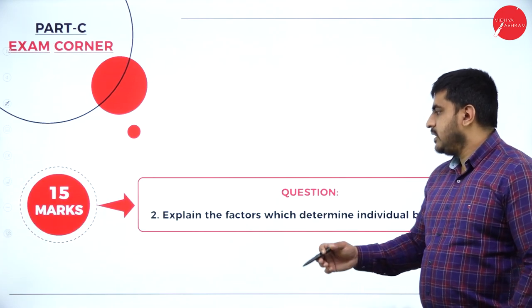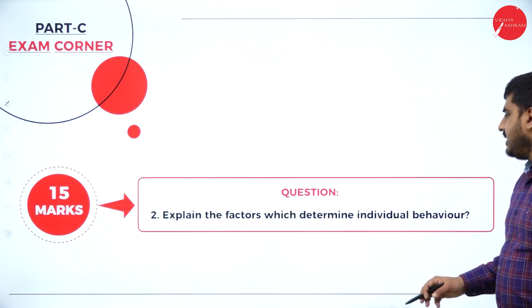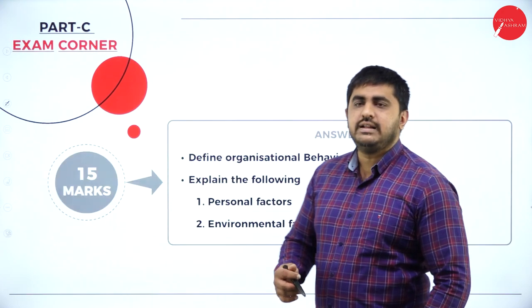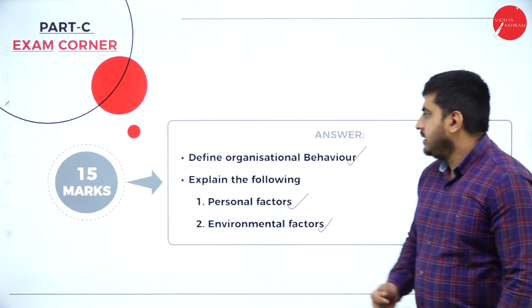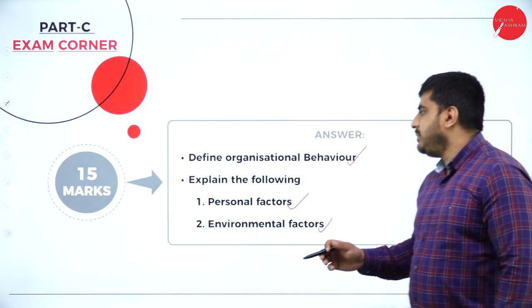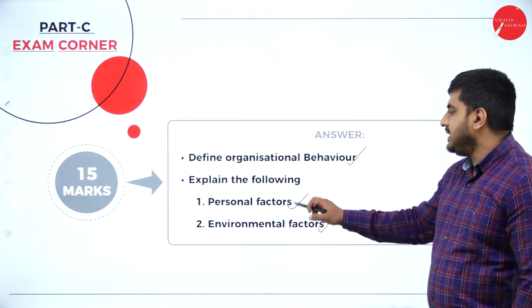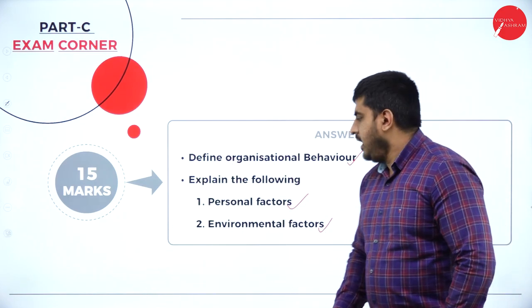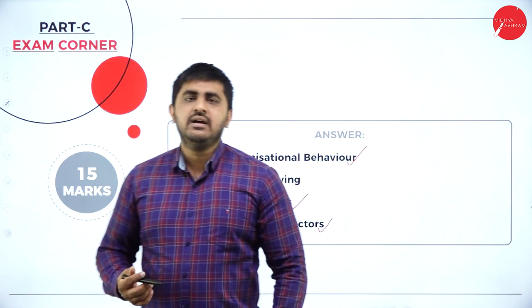The second question for 15 marks is: explain the factors which determine individual behavior. There are 2 factors — personal factors and environmental factors. How do you write this? Give one definition and meaning of organizational behavior, then explain the different personal factors, followed by the environmental factors as given in the notes.